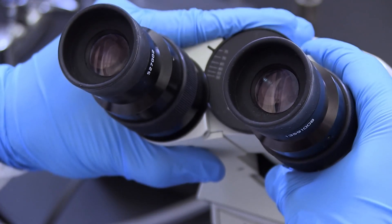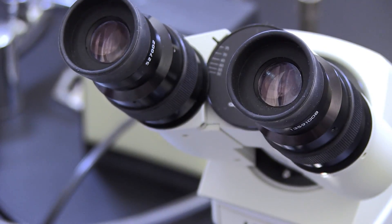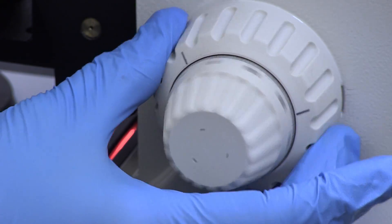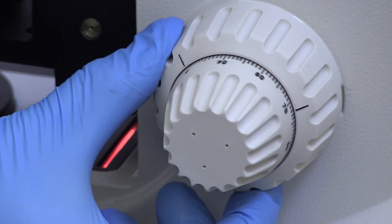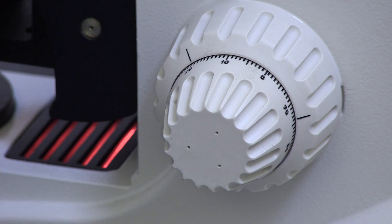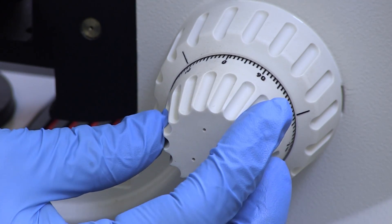Binocular microscopes will also have a means of adjusting the distance between the oculars. Two concentric focusing knobs are located on each side of the microscope. The large outer knob is the coarse focus adjustment, while the smaller inner knob is the fine focus adjustment.